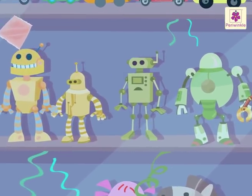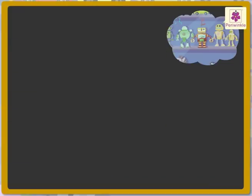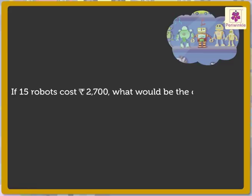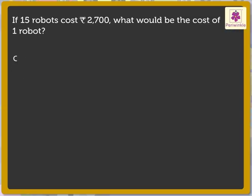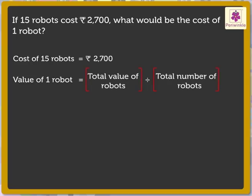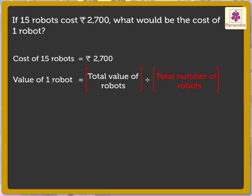Look at these robots. If 15 robots cost 2,700 rupees, what would be the cost of one robot? Cost of 15 robots is equal to 2,700 rupees. Now, to get the value of one robot, we have to divide the total value of robots with the total number of robots.